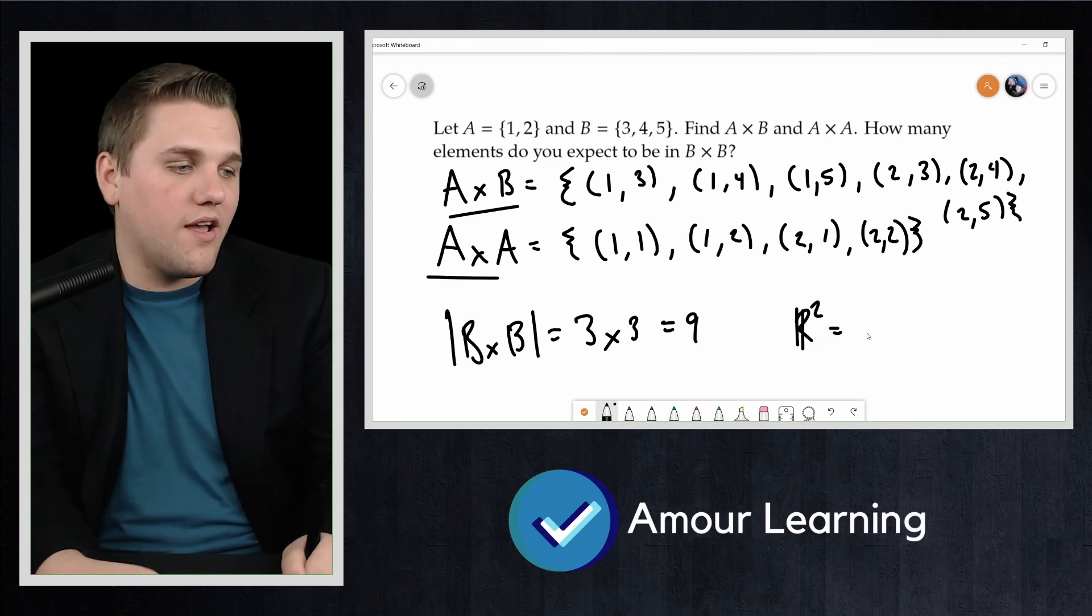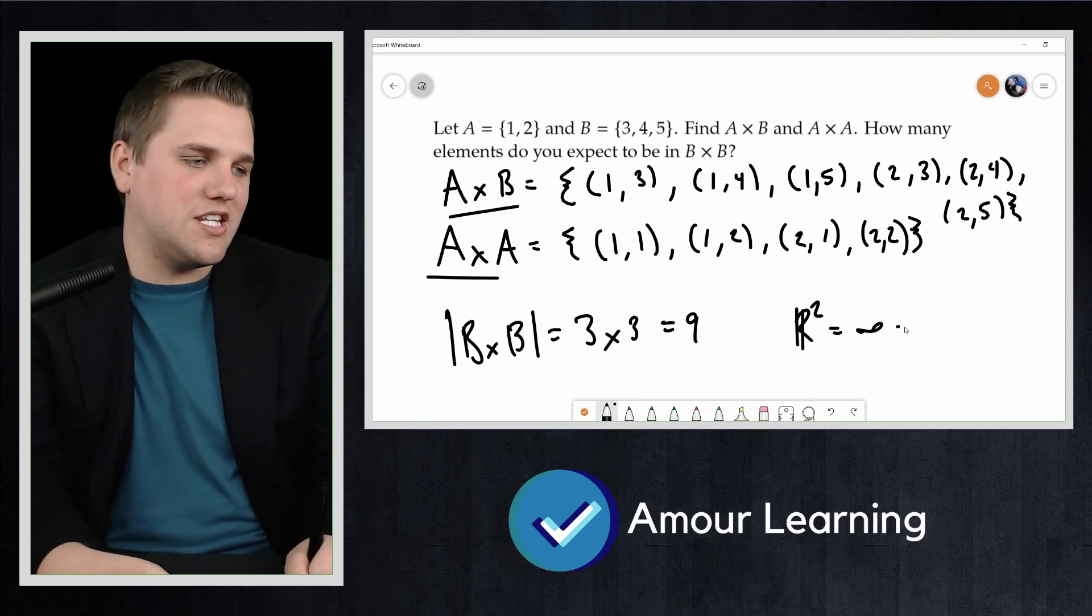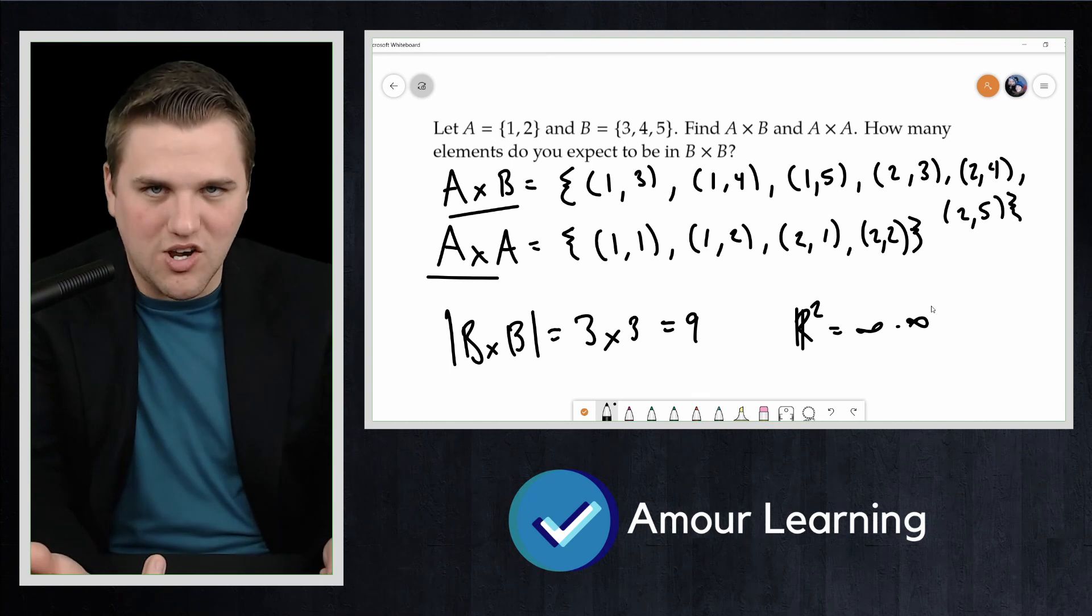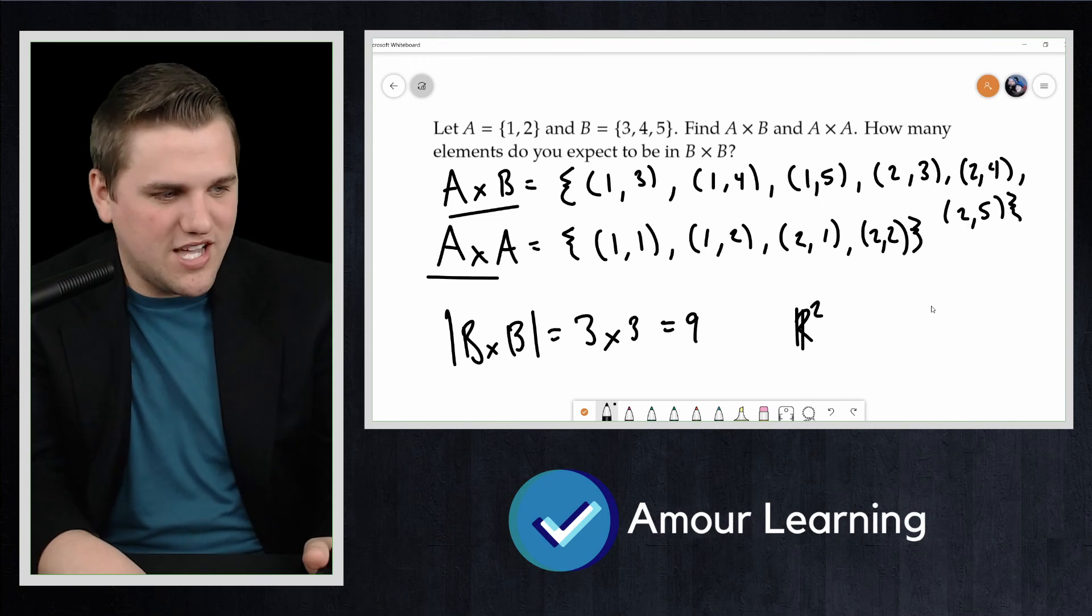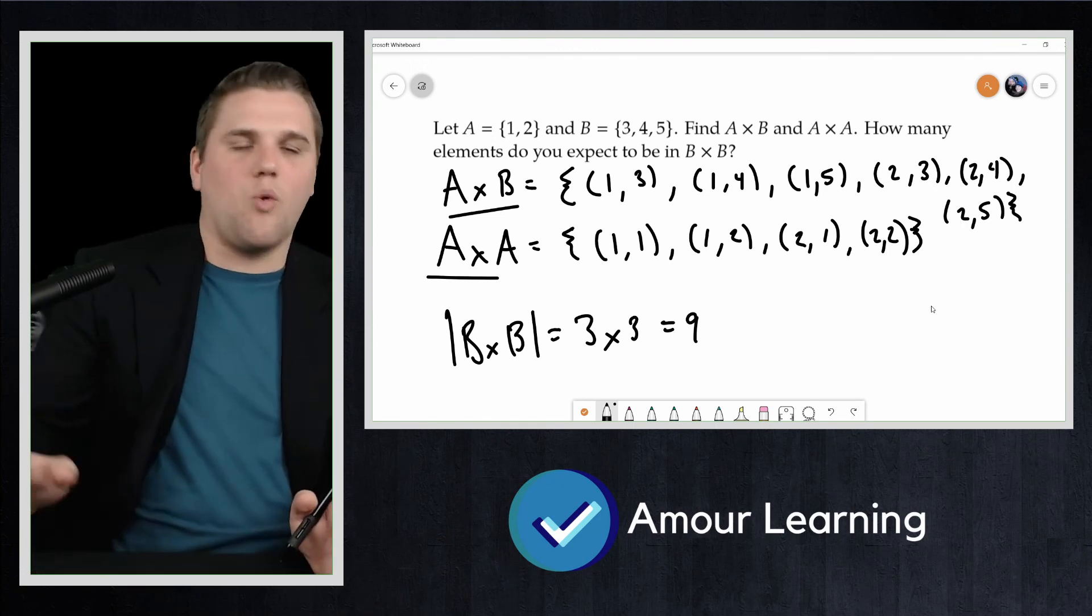And then by the way, R squared you can expect to be infinity times infinity. There are many, many, many coordinates on the Cartesian plane. And infinity times infinity is not really well defined anyway, so don't worry about that.